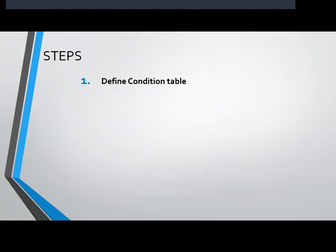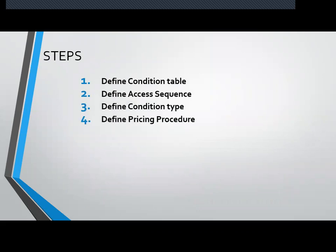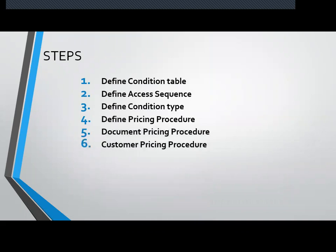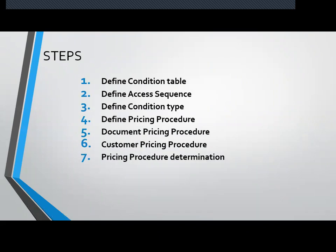The first step is define condition table. Second step, define access sequence. Third step, define condition type. Fourth step, define pricing procedure. Fifth step, document pricing procedure. Sixth step, customer pricing procedure. Seventh step, pricing procedure determination. Eighth step, condition record creation in VK11 transaction.